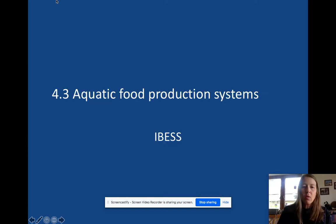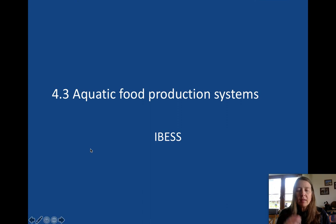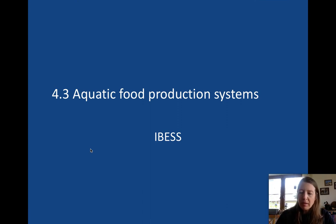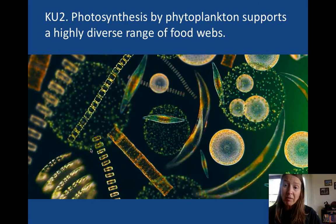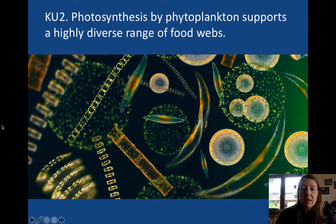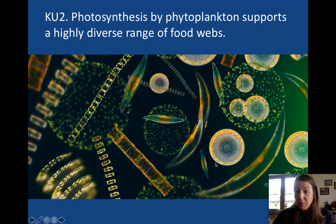We are looking at aquatic food production systems, and in this screencast we're going to be looking at some introductory basics, including the fact that all the food webs in the ocean are mostly supported by phytoplankton — little tiny, mostly single-celled organisms that can photosynthesize, making them the main primary producers.